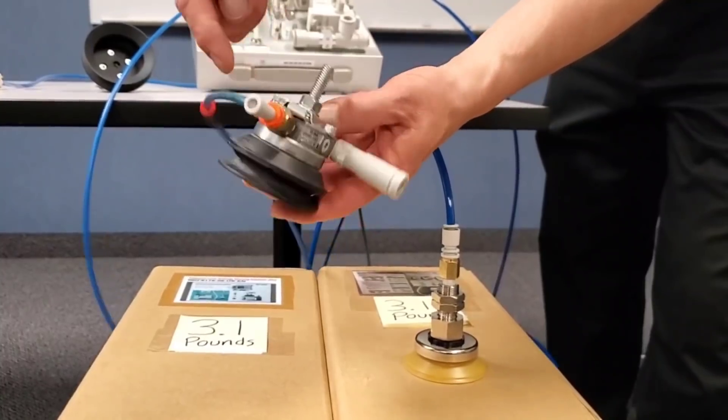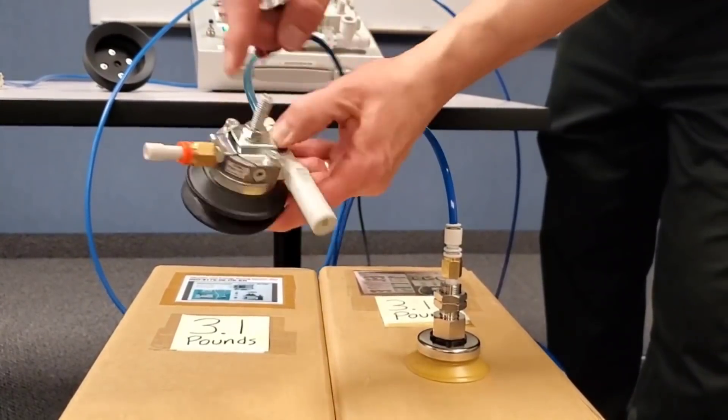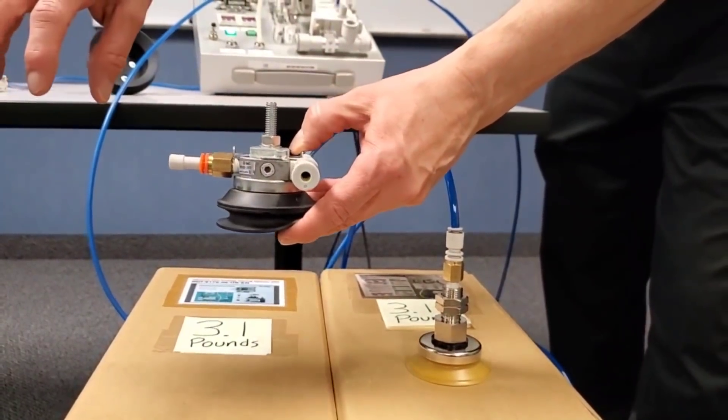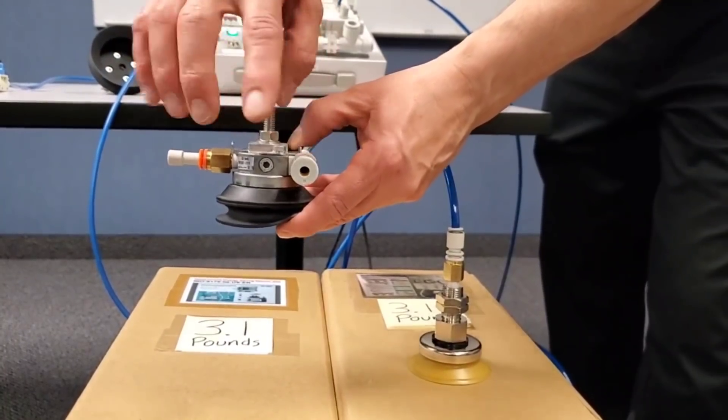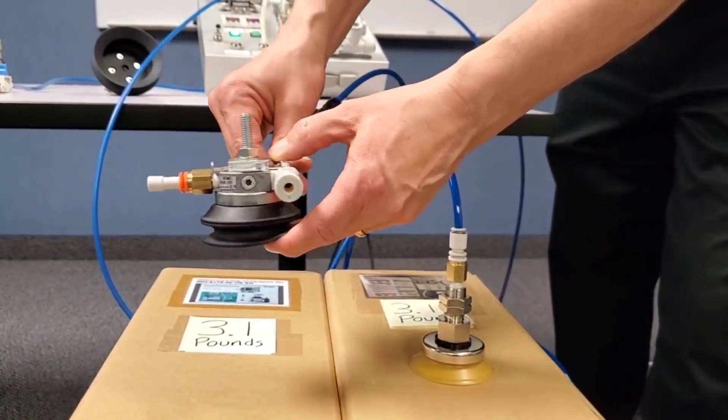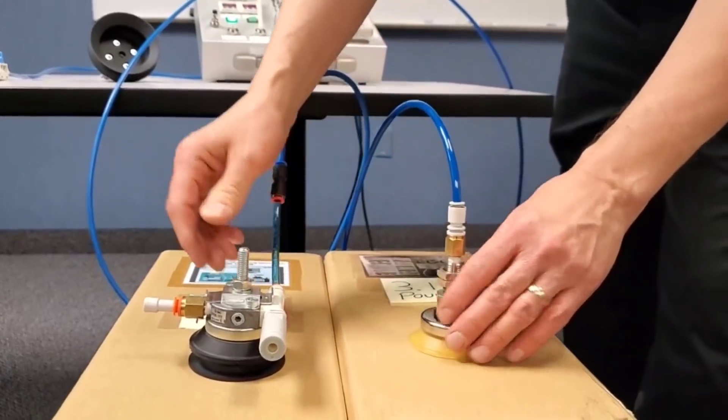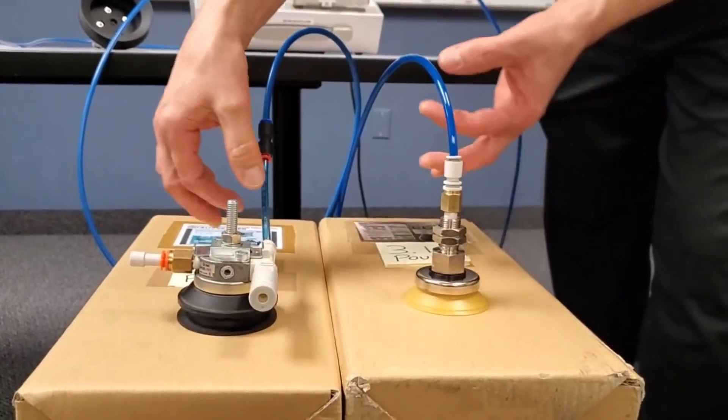It also has porting on three sides to allow an array of more than one cup running off of one ejector. The demonstration I'm going to show you, same diameter cups, same tubing.